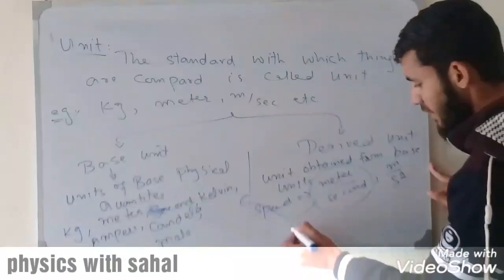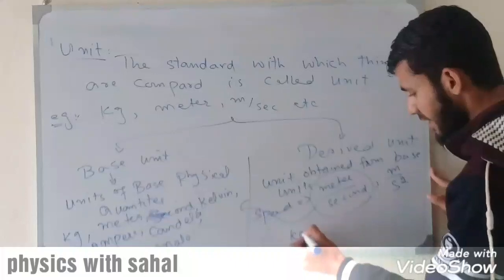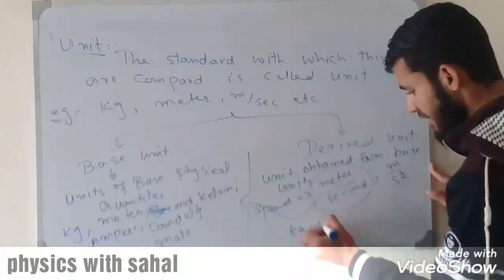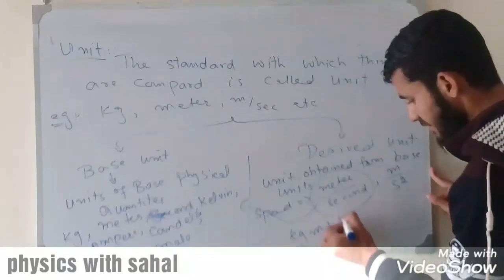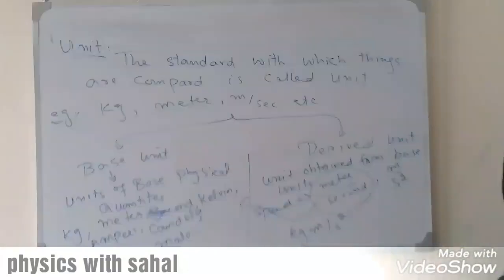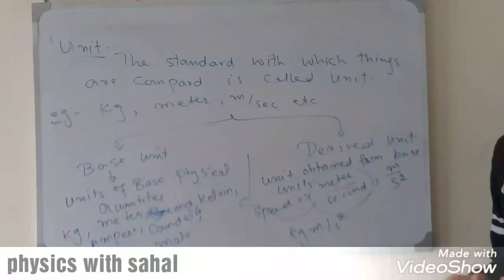We have force. The unit of force is kilogram meter per second squared, which is derived from base units. So this is also called a derived unit.